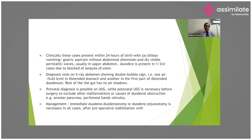Clinically, cases present within 24 hours of birth with bilious vomiting, gastric aspirate without abdominal distension, and visible peristaltic waves in the upper abdomen. Jaundice is present in one-third of cases. Diagnosis on X-ray abdomen shows the classic double bubble sign — one air-fluid level in the distended stomach and another in the first part of the distended duodenum, with no air shadow in the rest of the gut.